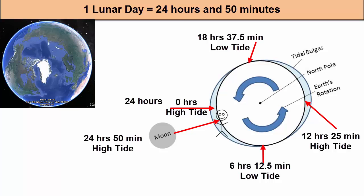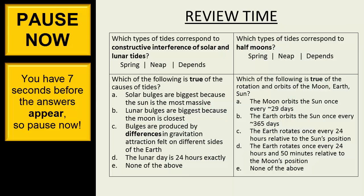And that's why we experience two high tides and two low tides every 24 hours and 50 minutes. Or more precisely, the period of one wave is 12 hours and 25 minutes. Pause now.